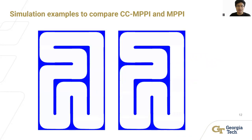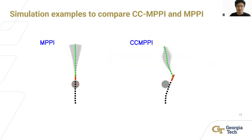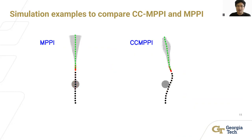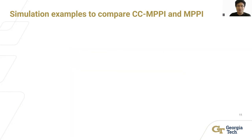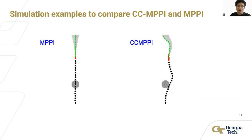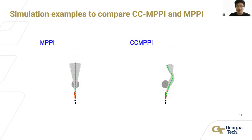In this simulation example, we put an obstacle in front of the vehicle. The MPPI runs into a local optimum and leads to collision. The CCMPPI can find an optimal solution to go around this obstacle.